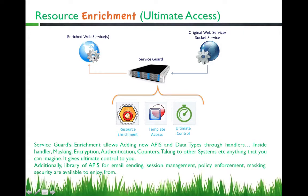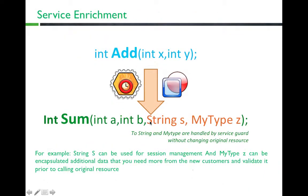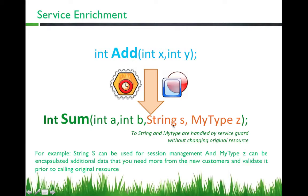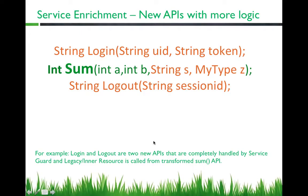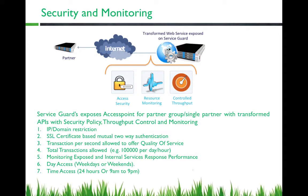A simple enrichment example: you can add new parameters — integer S and my type Z — coming in, and these two data types are handled at ServiceGuard level while the original legacy web service doesn't change at all. Another example is adding new APIs: if your internal API was 'sum' and you also wanted to add 'login' and 'logout' as two APIs, you can add these and they will be handled at ServiceGuard level.